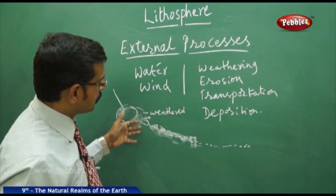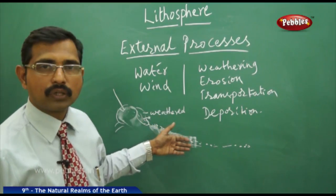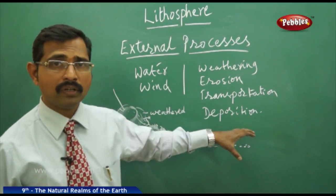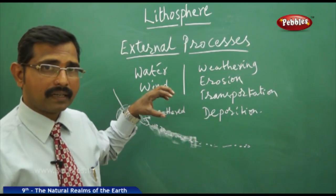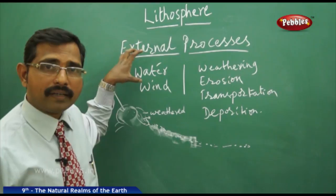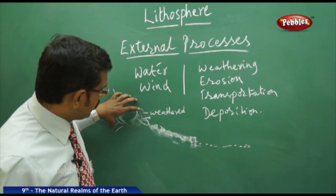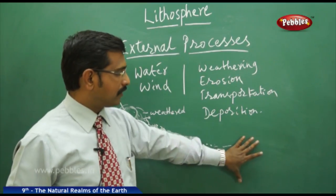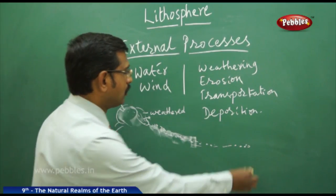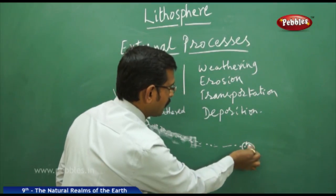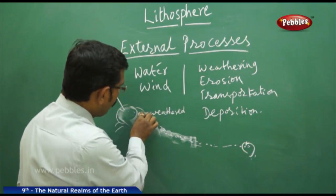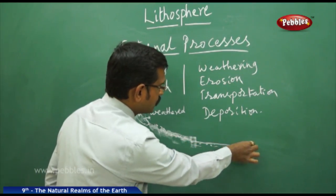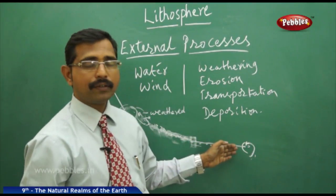Sometimes these particles travel thousands of kilometers. For example, rock material weathered in the Himalayan area is carried by the River Ganga all the way to the West Bengal region — this small particle body travels thousands of kilometers.